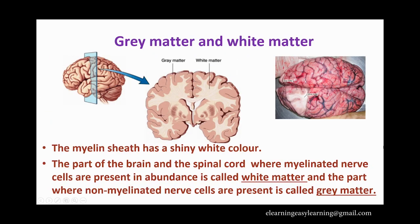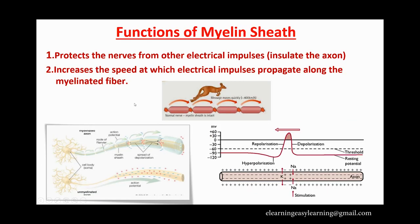Now let us see what is grey matter and white matter. Looking at a picture of a real brain with part of the outer surface cut and removed, you can see a shaded area and a white area. The shaded area is known as grey matter and the white region is known as white matter. The two colors exist because of the presence or absence of myelinated nerve fibers — where myelinated nerve cells are abundant, that region is called white matter; where non-myelinated nerve cells are present, that is called grey matter.